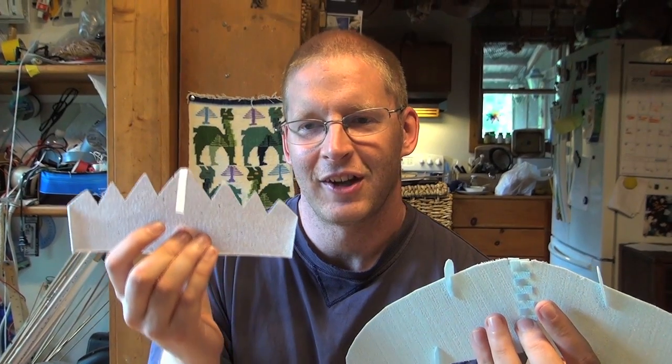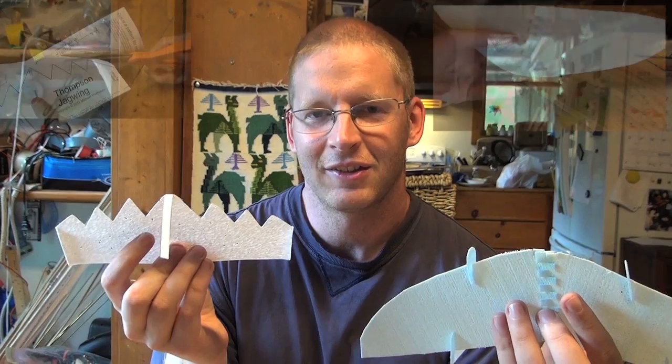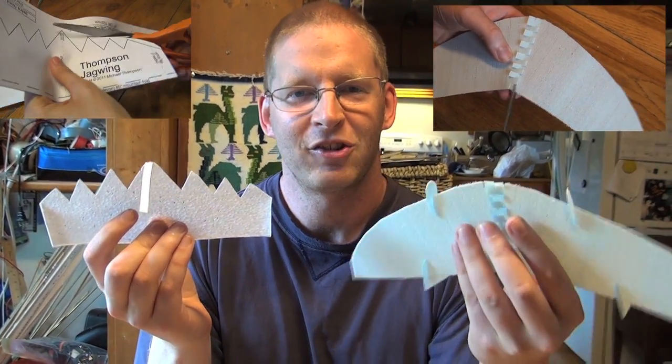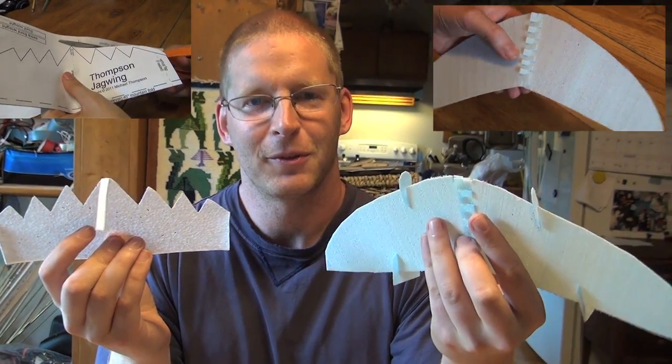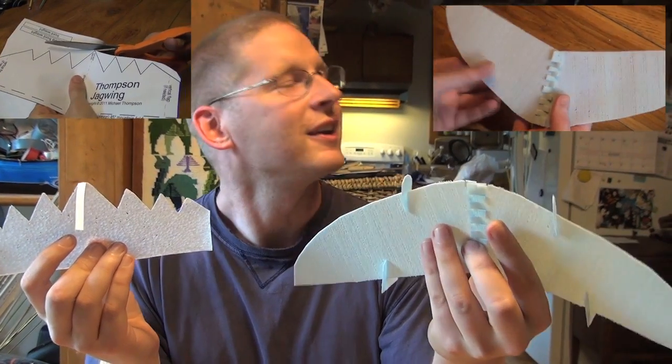If you want to make a standard jag-wing design like this, click here. If you want to make a modular walk-along glider that comes apart for easier storage, click here.